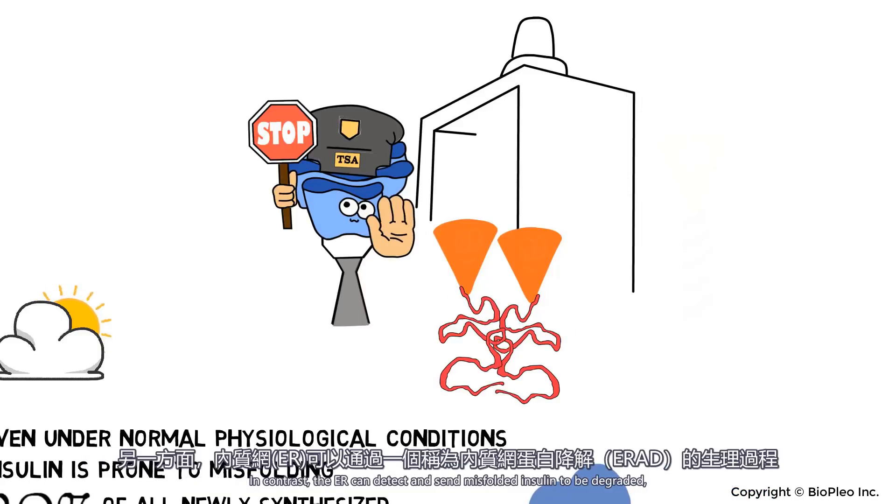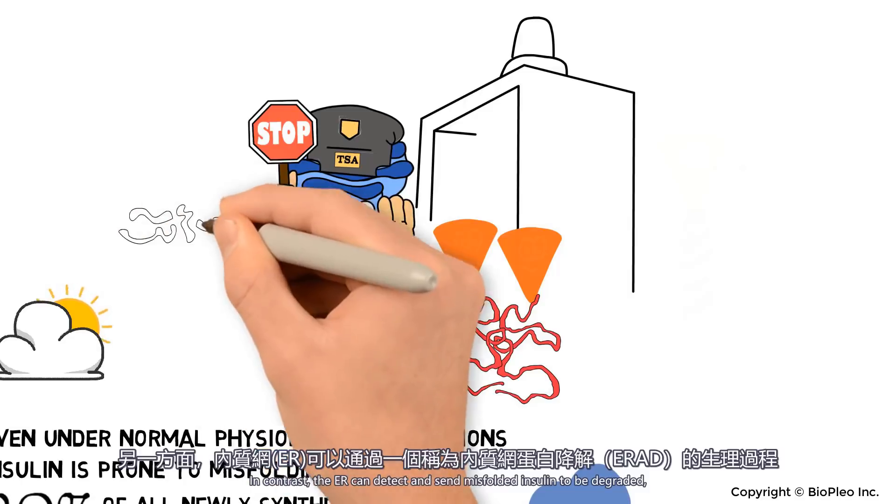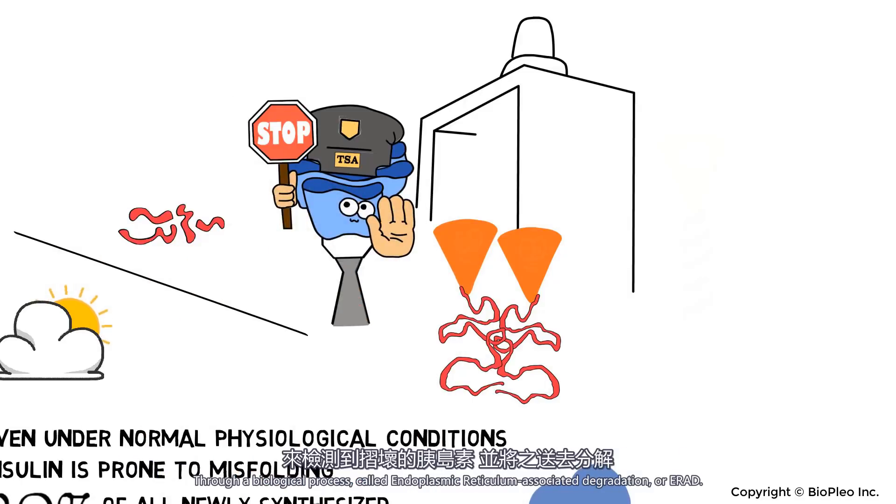In contrast, the ER can detect and send misfolded insulin to be degraded through a biological process called endoplasmic reticulum-associated degradation, or ERAD.